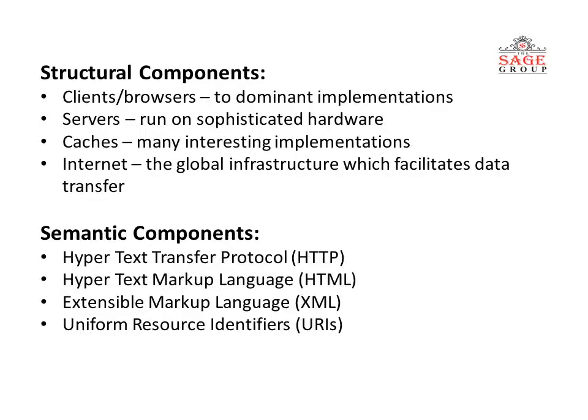WWW has two types of components: structural components and semantic components. Structural components include links, browsers, servers, and caches. Semantic components include HTTP (Hypertext Transfer Protocol), HTML (Hypertext Markup Language), XML, and URIs.